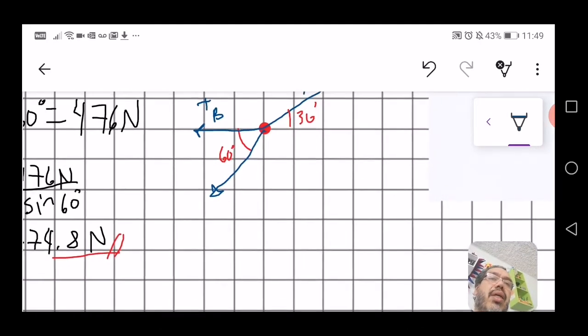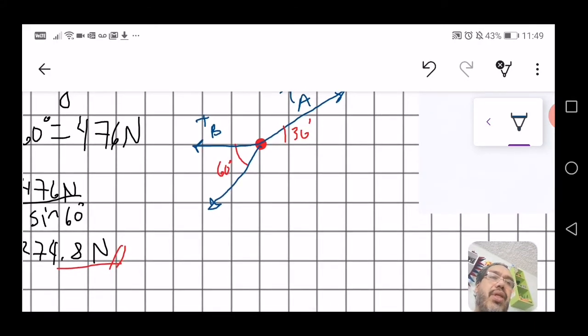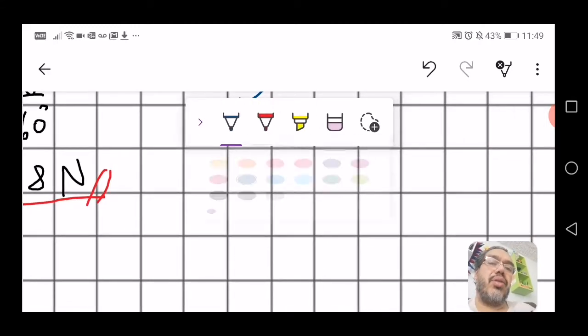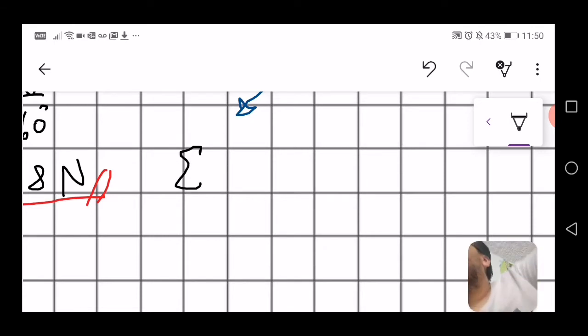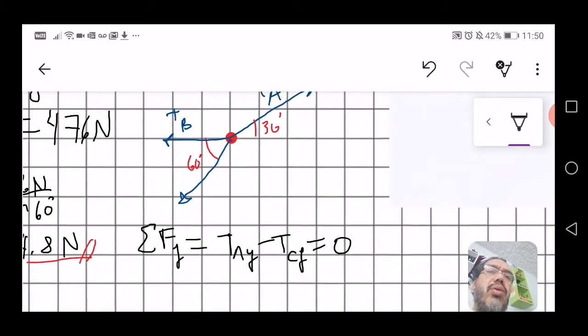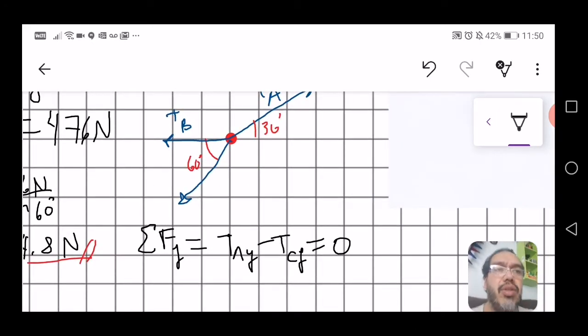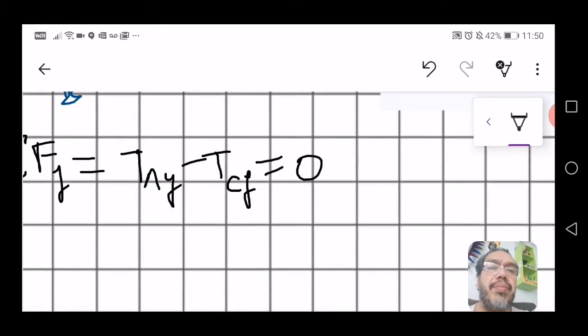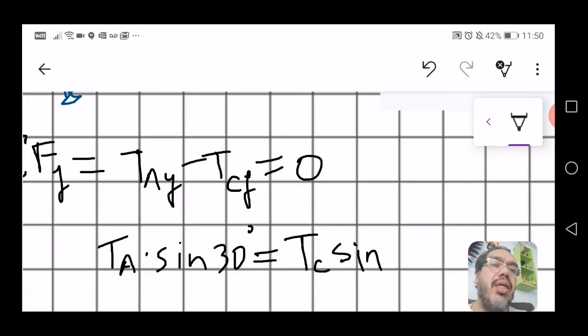Interestingly enough, more can be done if you first do your sum of forces in the y direction. So, in the y direction, you have that the sum of forces in y is equal to T A y minus T C y and that's equal to zero. Now, why don't we include tension B? Basically, because tension B is completely horizontal. So, it doesn't have a y component. All you get is T A sine of 30 degrees is equal to T C sine of 60 degrees.